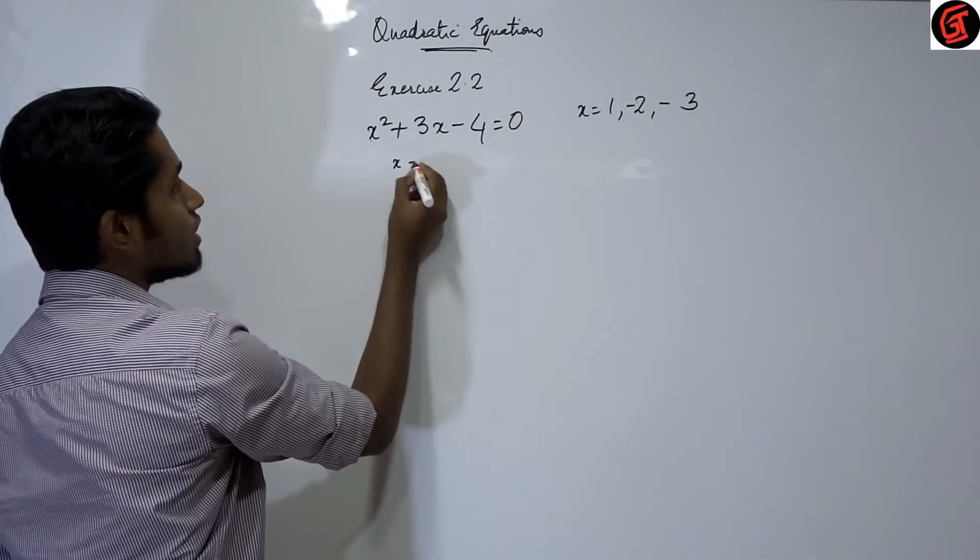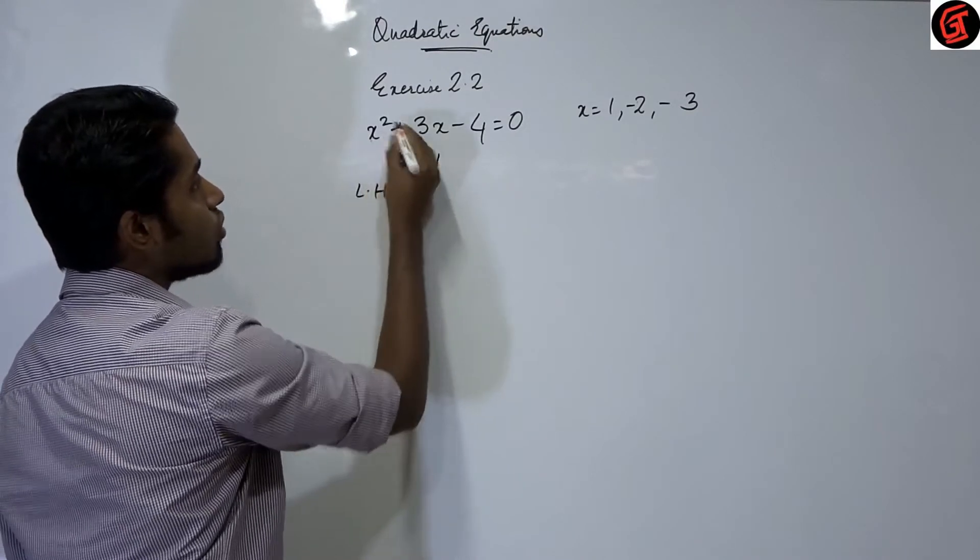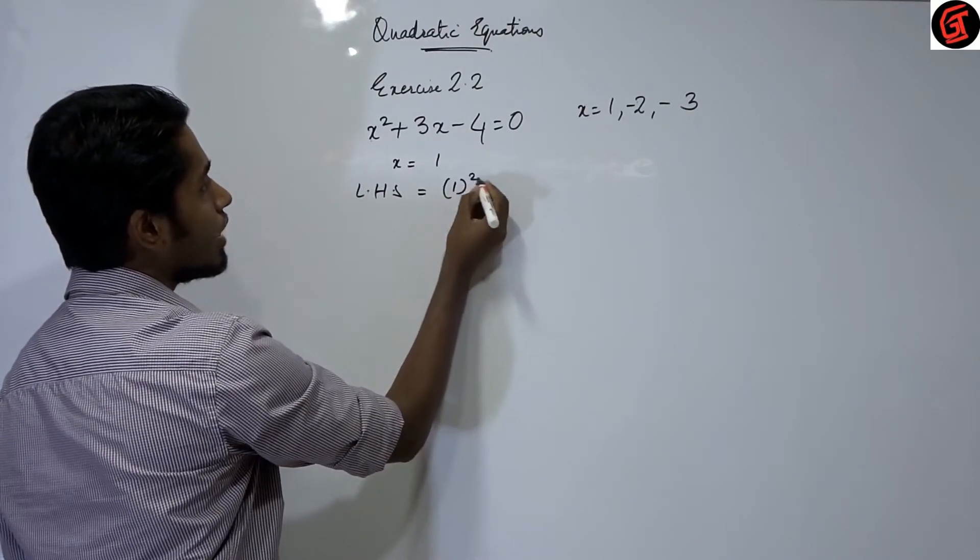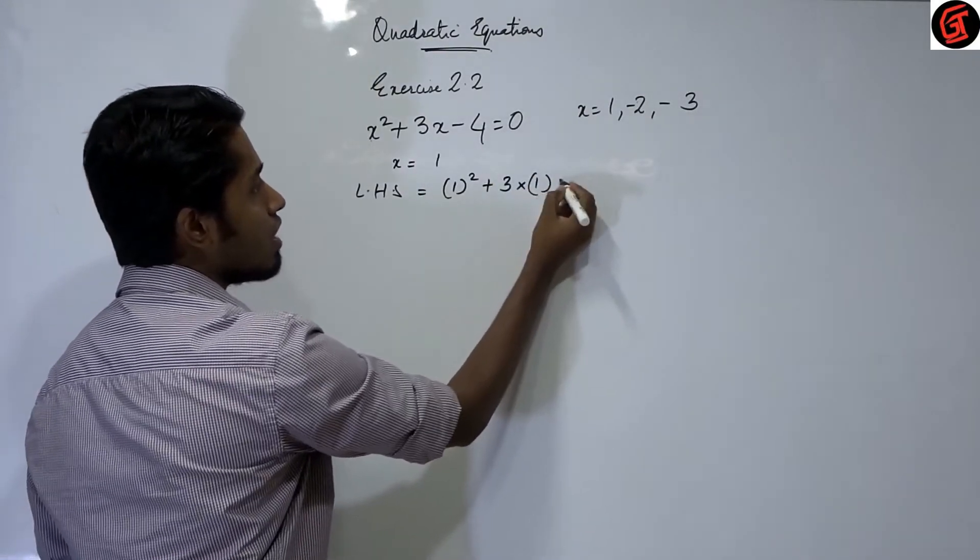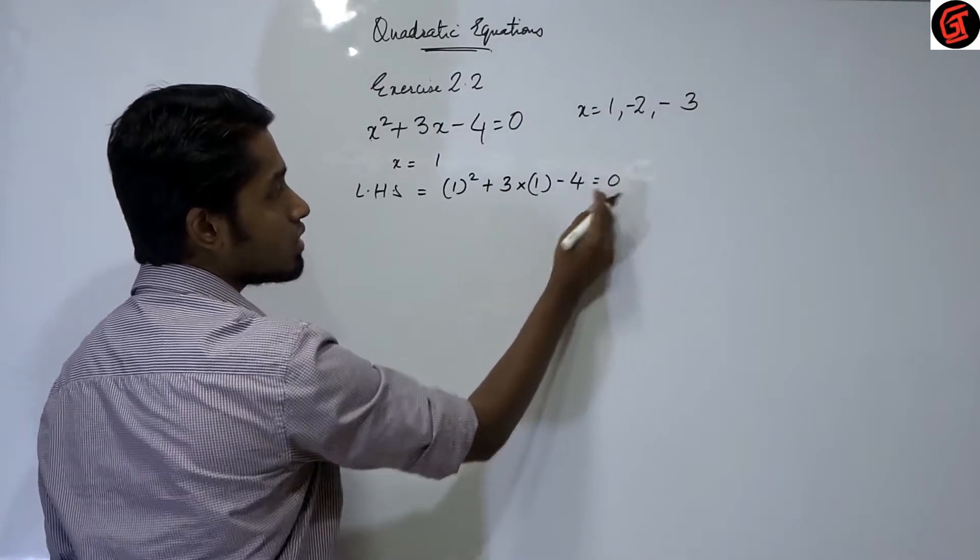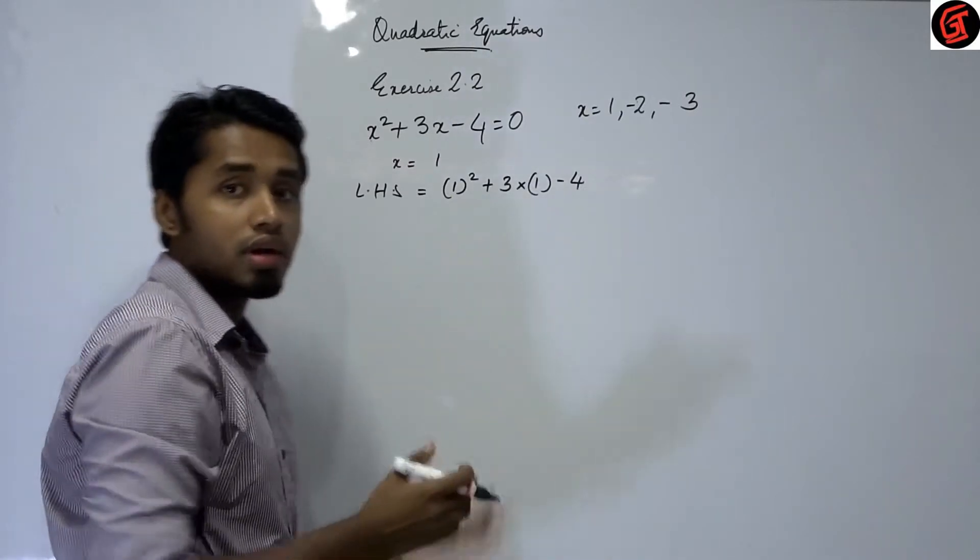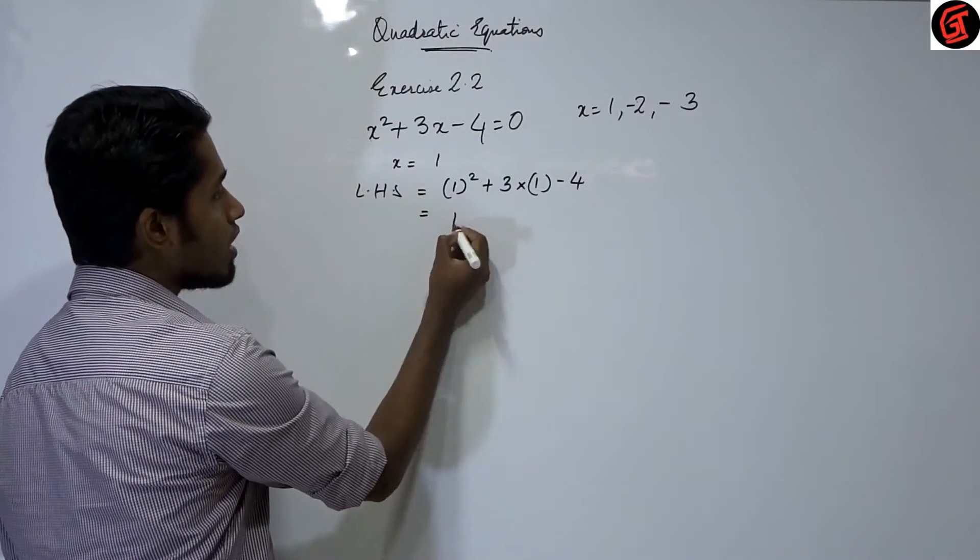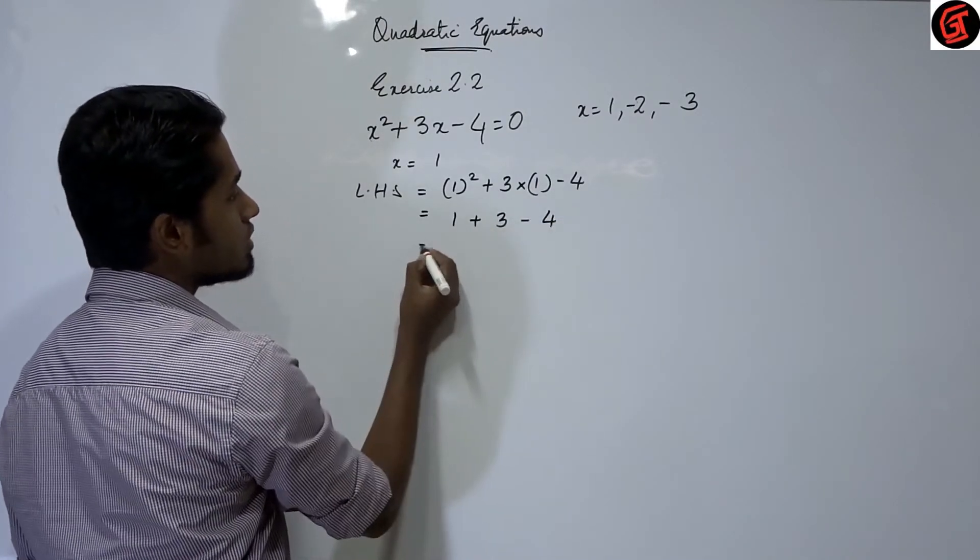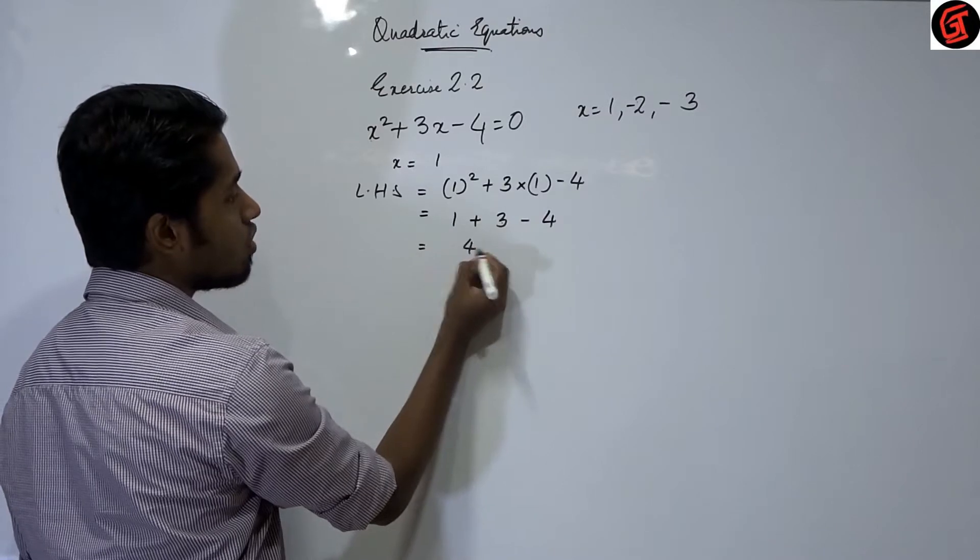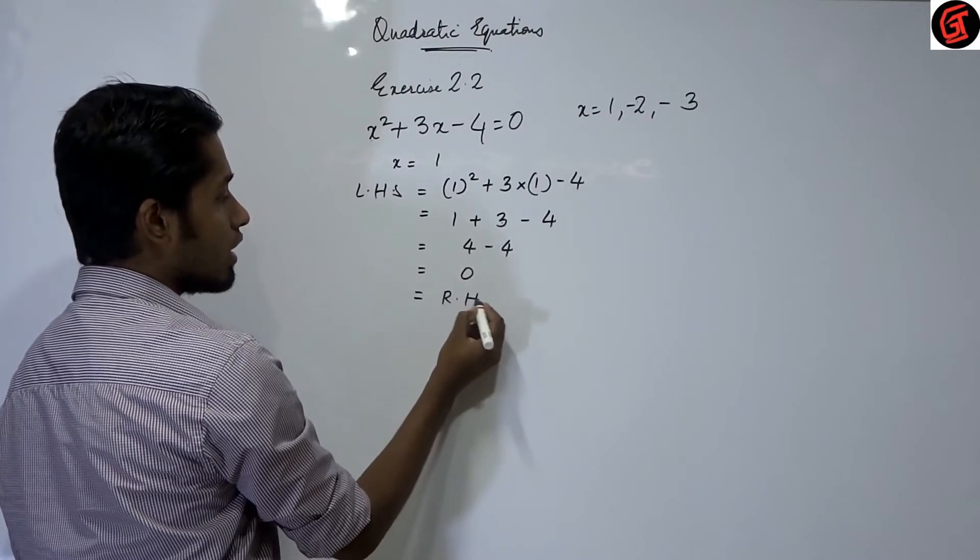Let's check. First is x is equal to 1. So LHS is equal to x square, that means 1 square plus 3x, that means 3 multiplied by 1 minus 4 is equal to 0. This we have to find. This is equal to 1 plus 3 into 1, that is 3 minus 4. That is equal to 3 plus 1 is 4 minus 4. That is equal to 0.